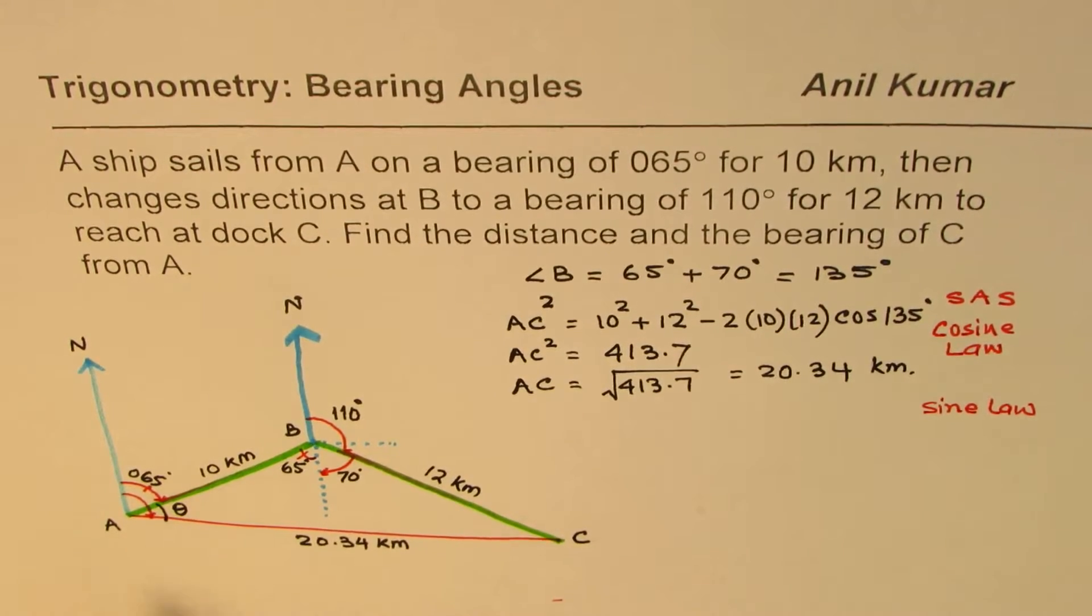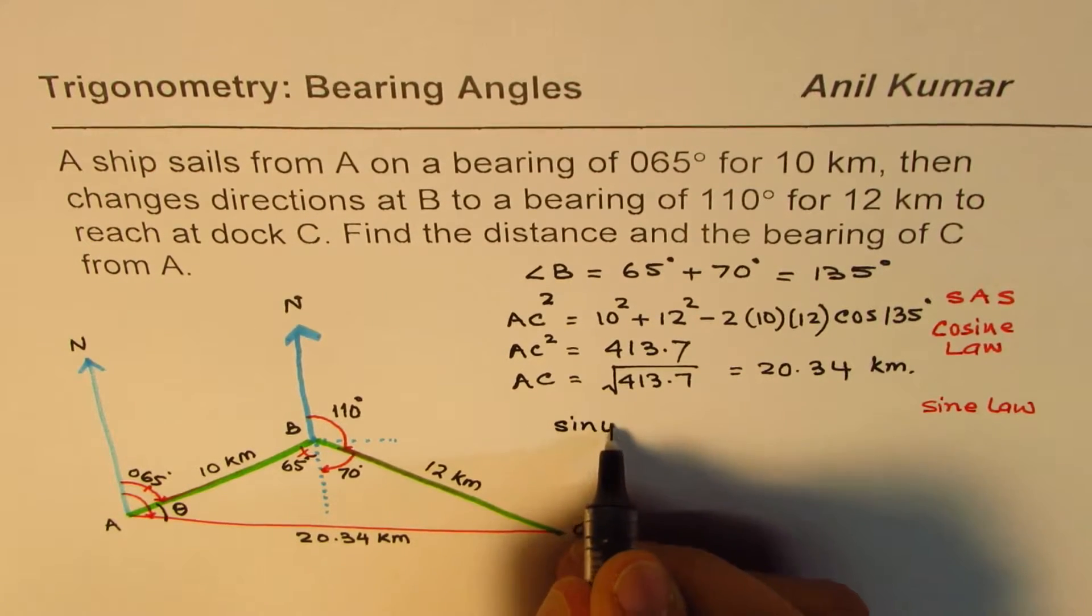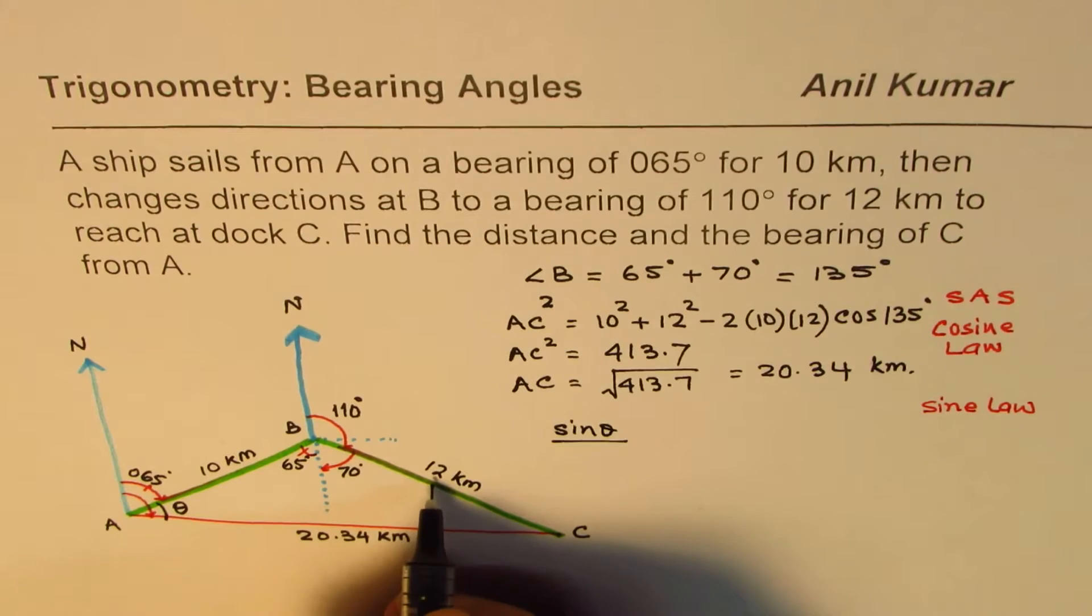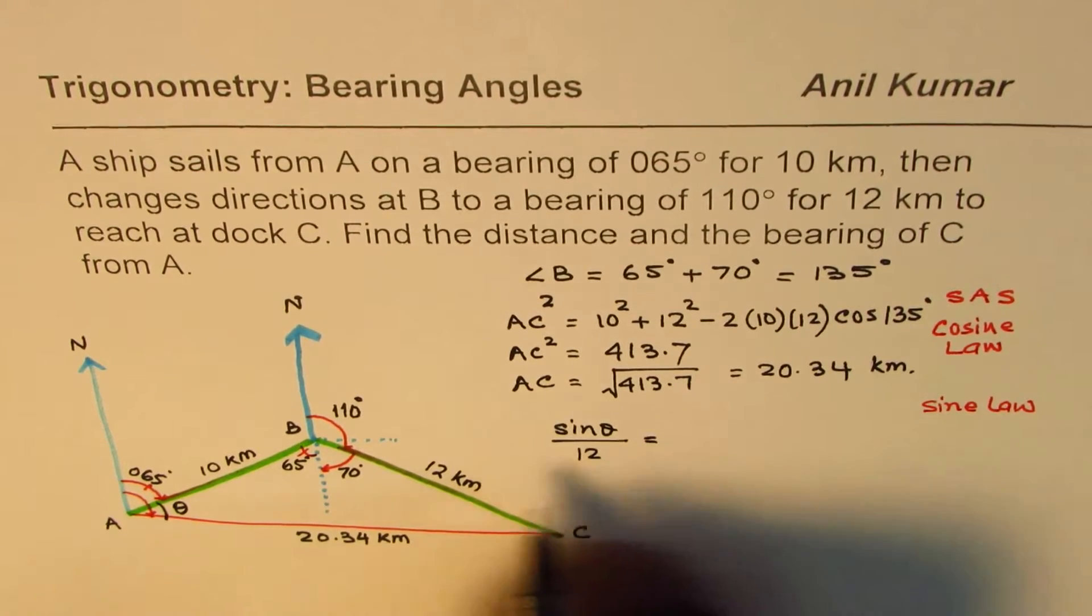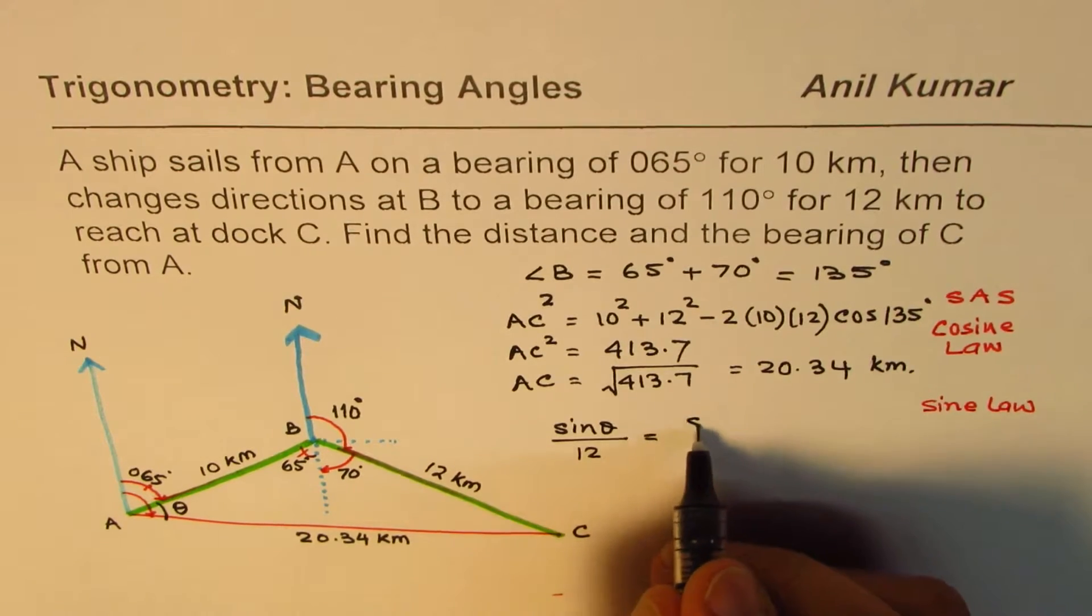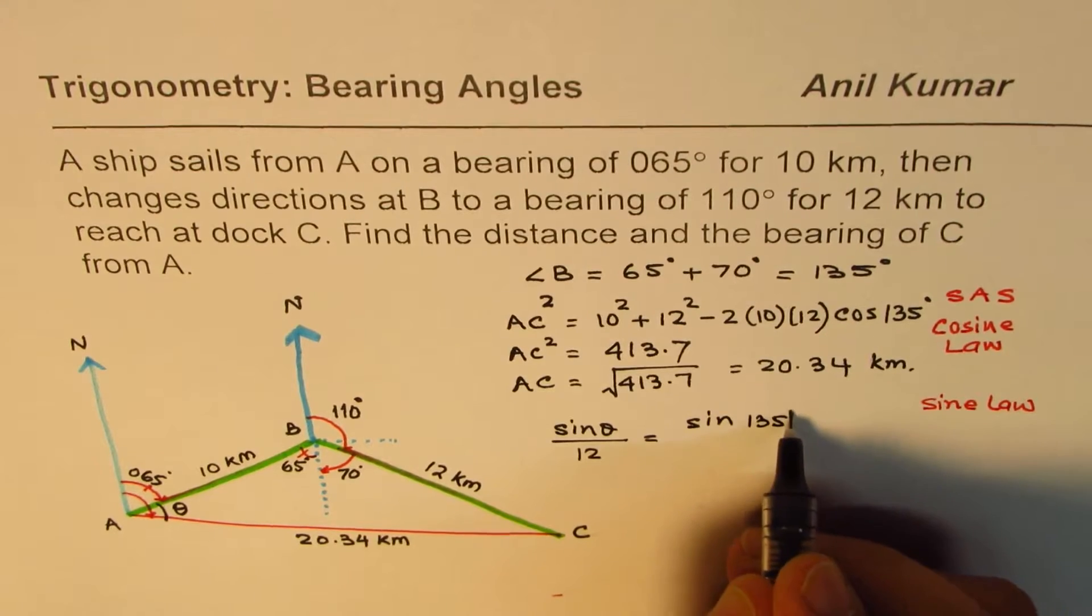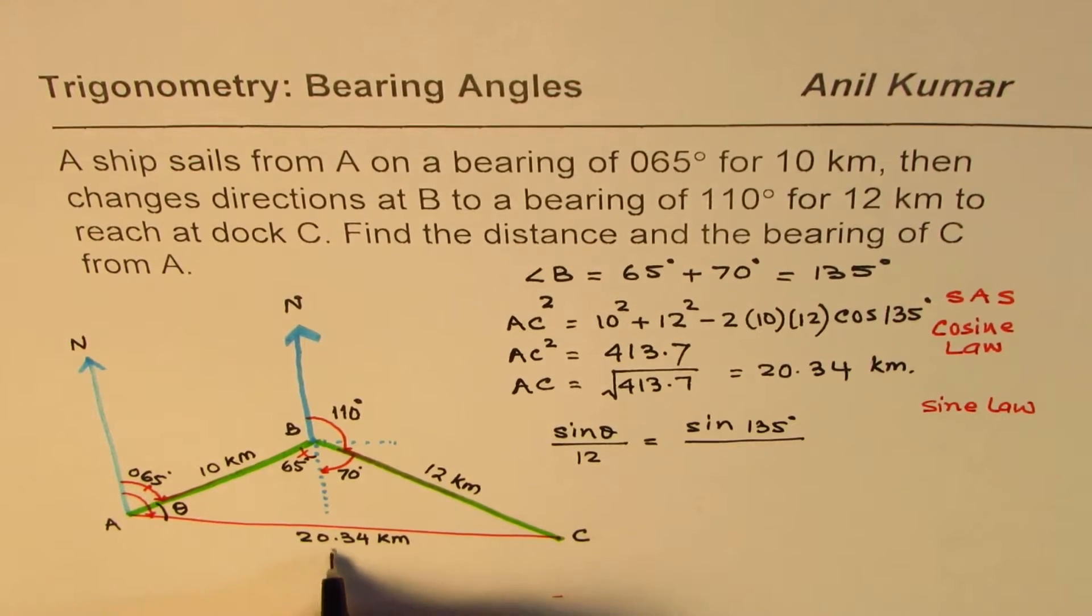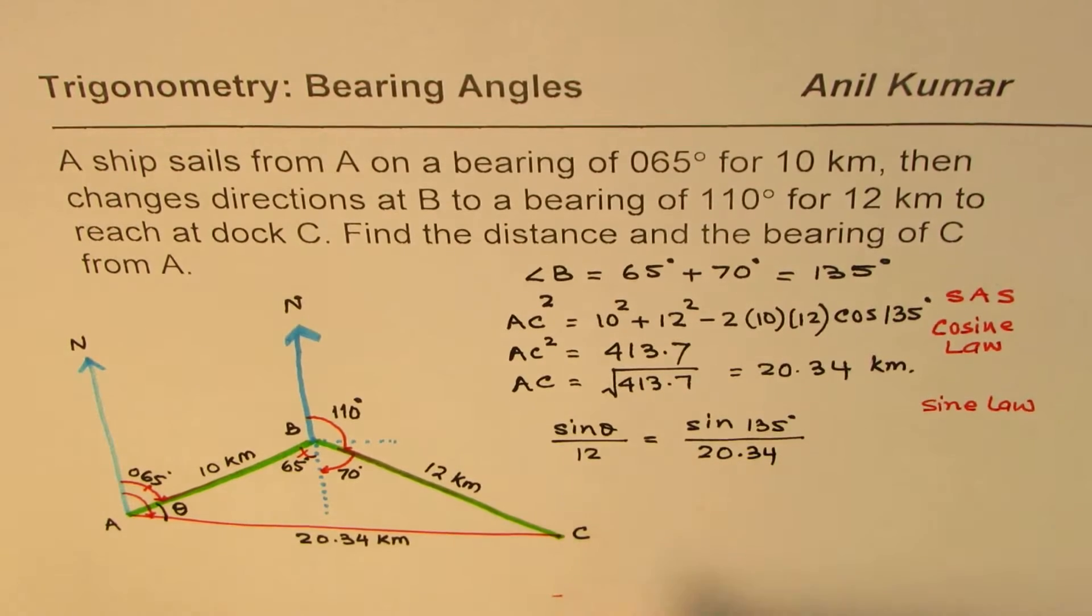Since we need to find theta, I'll put it on the top. So we can write this as sine theta over the side given opposite to sine theta, which is 12, should be equal to sine of the angle which is 135 degrees divided by just calculated side, which is 20.34.